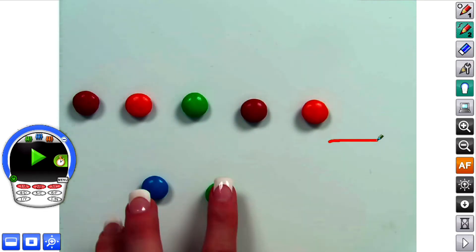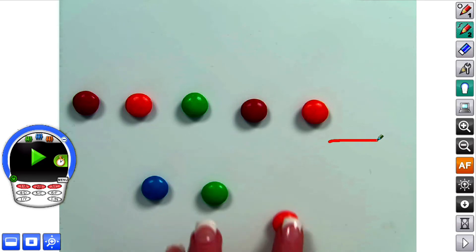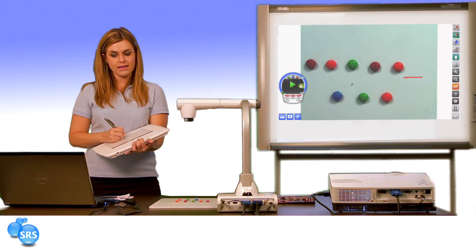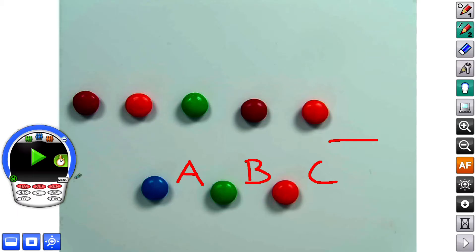So now, I'll say what comes next in this pattern. Is it A, B, or C? There's three choices in this question, so I'll select 3C. And then I'll start the time.